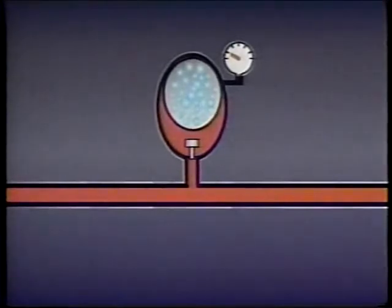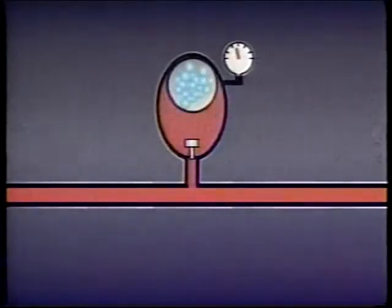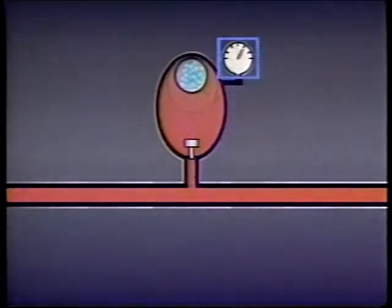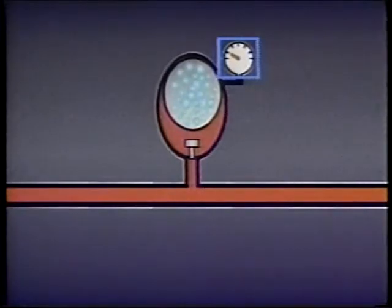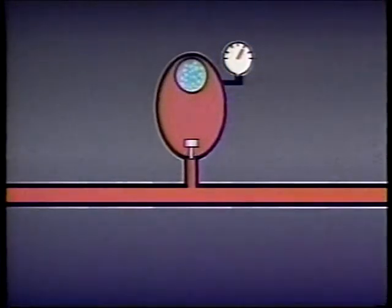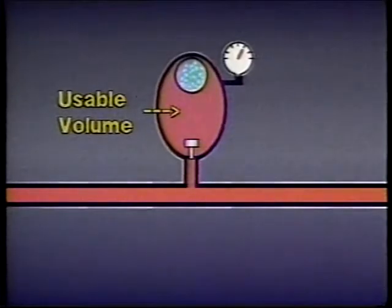After the accumulator has been pre-charged with nitrogen it is ready to be used. To develop flow or to maintain fluid pressure, the accumulator must be filled with fluid until the nitrogen pre-charge reaches a specific maximum pressure. Then as the system requires flow or pressure, the accumulator discharges fluid until the pressure of the pre-charged nitrogen drops to a specific minimum level. The volume of fluid the accumulator discharges between a maximum pressure and a minimum pressure is called the accumulator's usable volume.